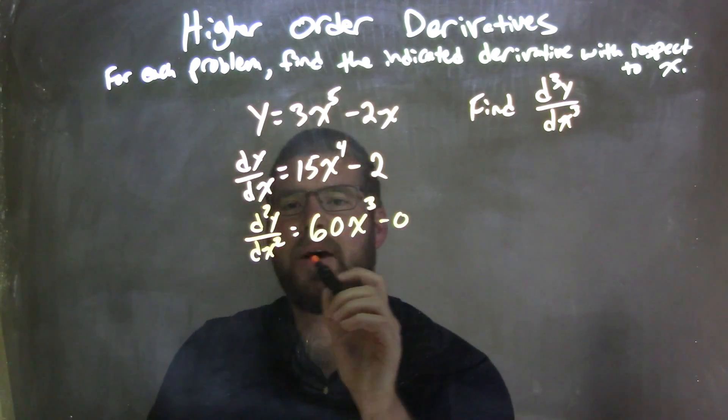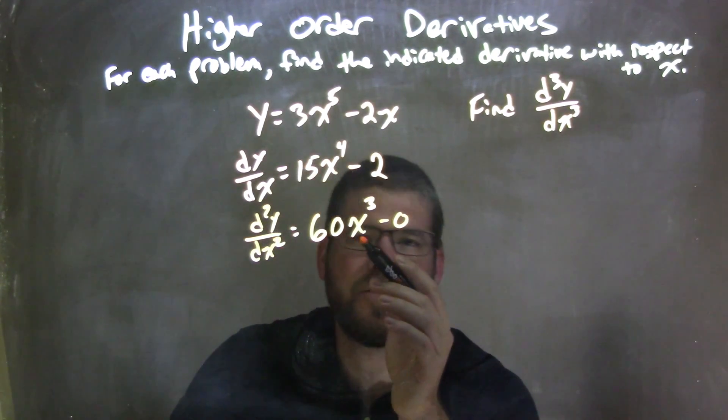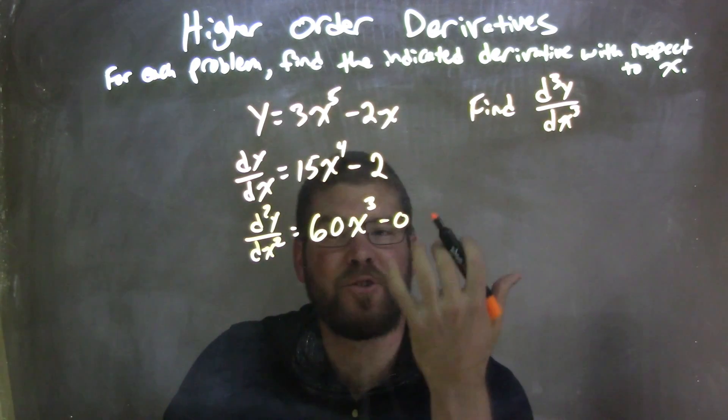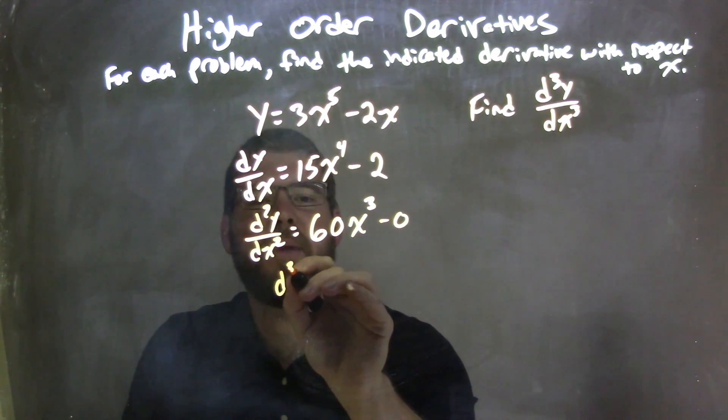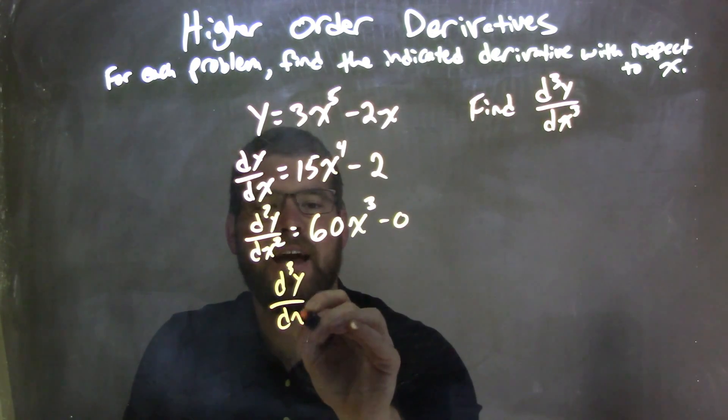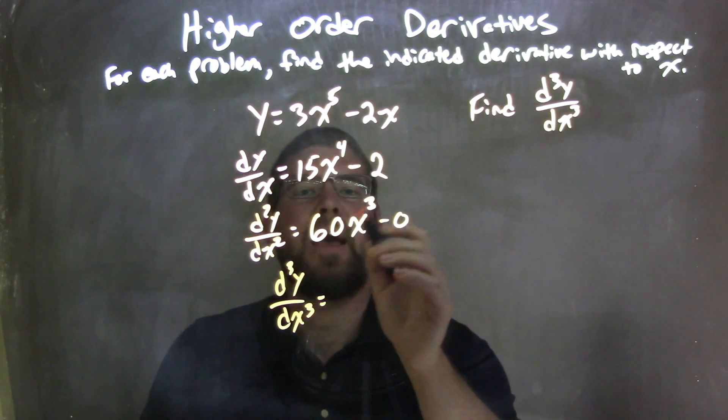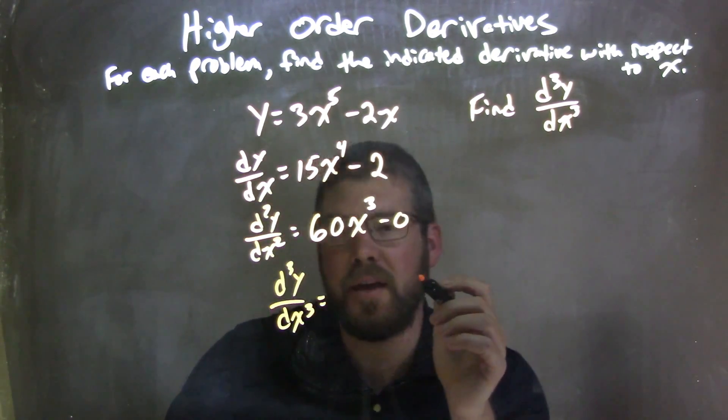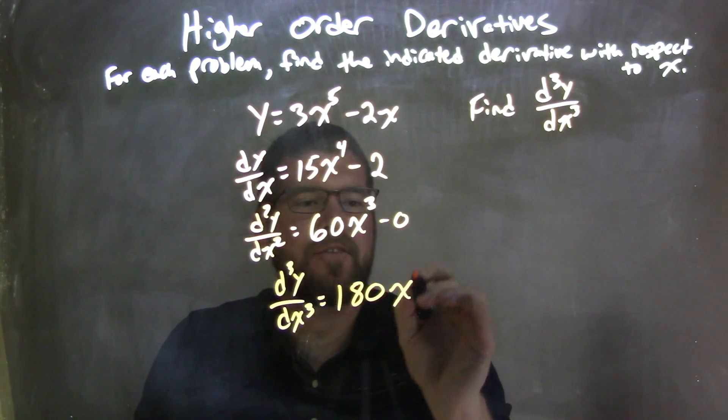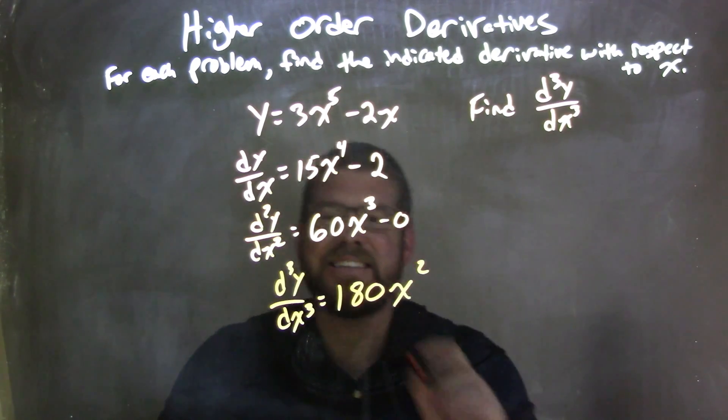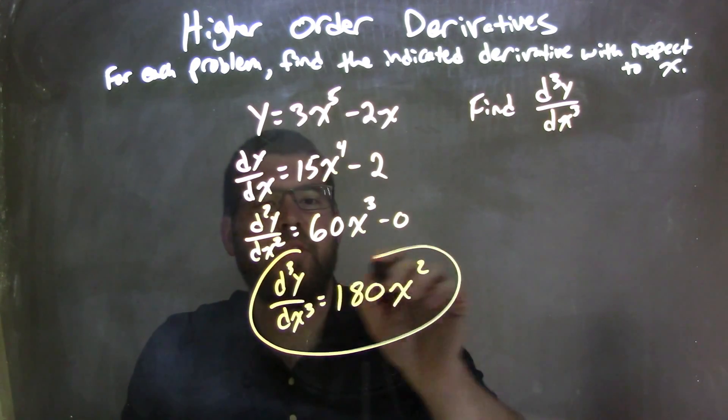So now we have d to the second power of y over dx squared is equal to 60x to the third power. And that's our second derivative, but we need to find the third derivative. So we go to d to the third power of y over dx to the third. And 60 times 3 is 180. So we have 180x squared. And that is our final answer. That is our third derivative.